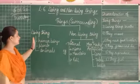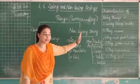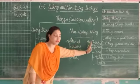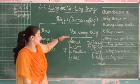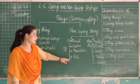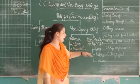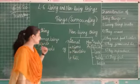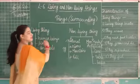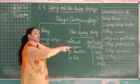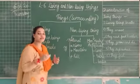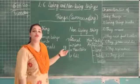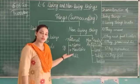So now we have two categories: living things and non-living things. Non-living things are further divided into natural and man-made or artificial. Natural examples: rivers, mountains, hills. Man-made or artificial examples: cars, tables, chairs. Hope these categories are clear to you. Non-living things do not grow and cannot reproduce. Have a good day, students.